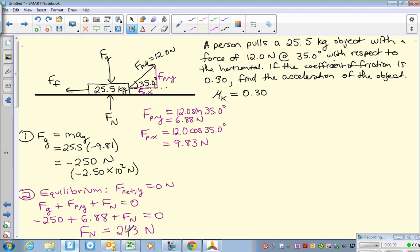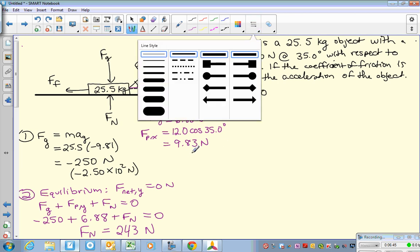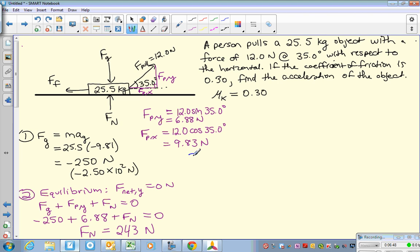The reason why it's important to find our normal force is because once we know the normal force, we know the friction force. So the third step would be to find the friction force. Well, if you remember, friction force is related to normal force, which makes sense. The harder you push down on an object, the harder it is to pull it across the surface. Equals a coefficient of friction, and since it's moving, it's kinetic times the normal force.